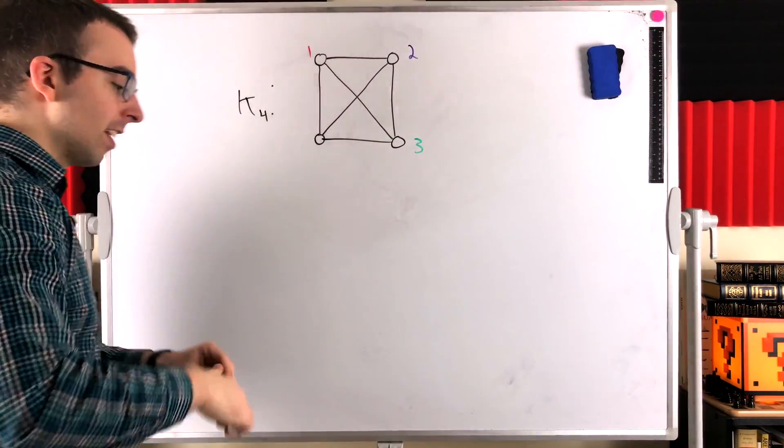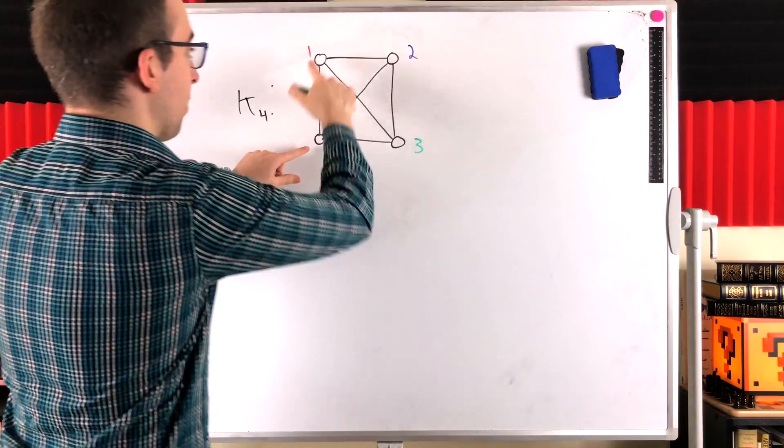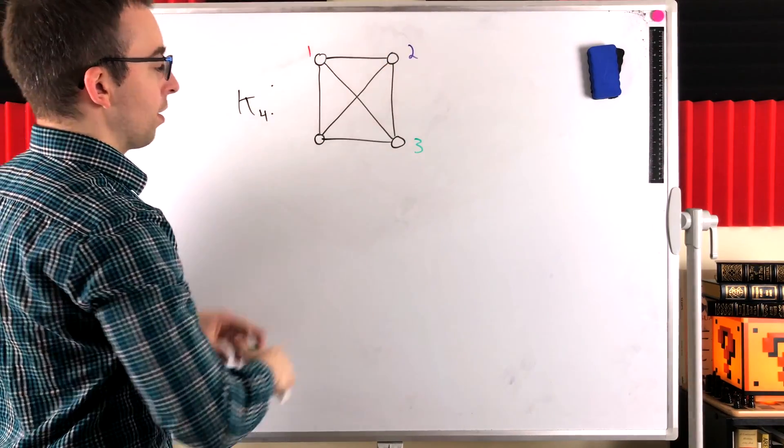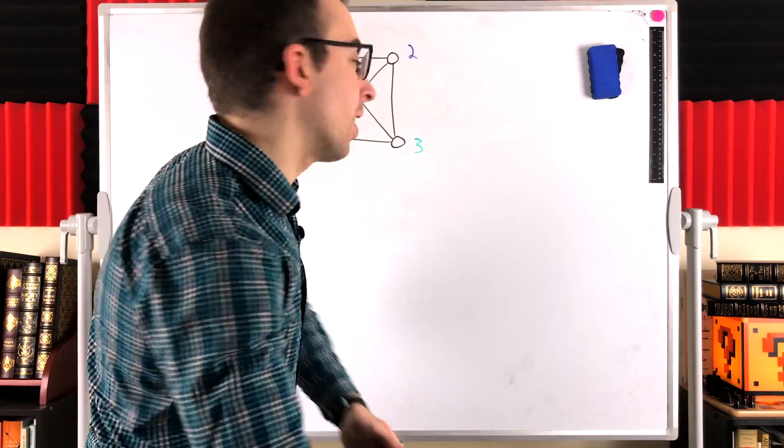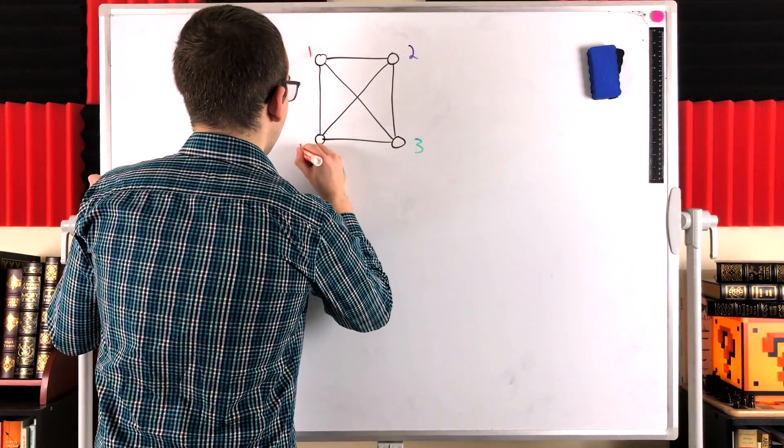And then again, this last vertex, we know it's adjacent to all the vertices we've already colored one, two, and three, since this is a complete graph. So we'll have to break out another new color, and we might color this four.